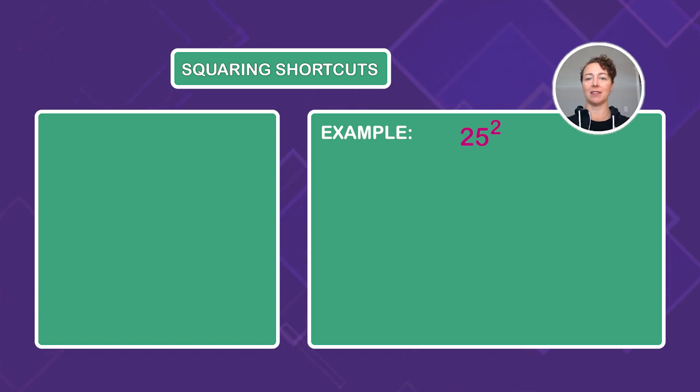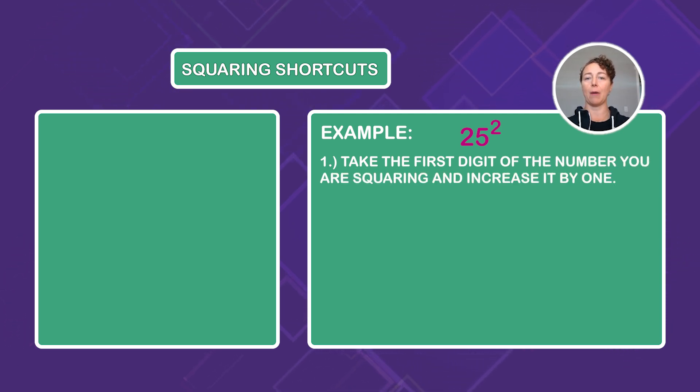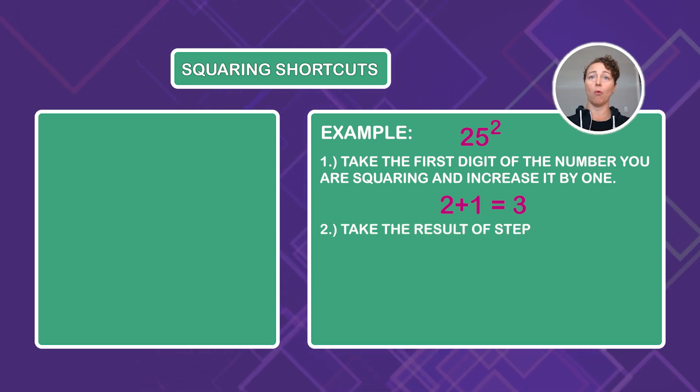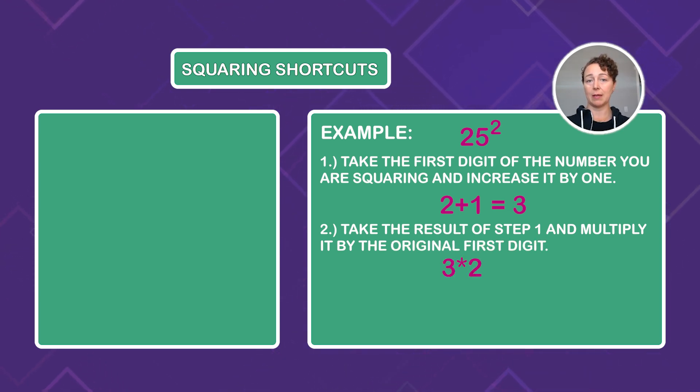25 squared. Let's work through step one. Take the first digit of the number you are squaring and increase it by one. Two plus one is three, right? Our original digit was two, the original first digit in 25, two. And once we add one to it, we have three. Now we can already move on to our next step. And that is taking the result of step one and multiplying it by the original first digit. So we need to multiply two times three, and that's going to give us six.